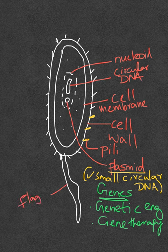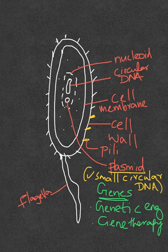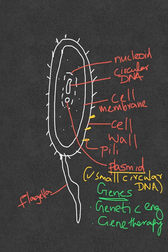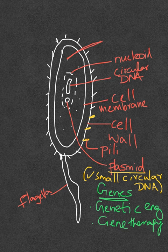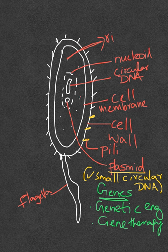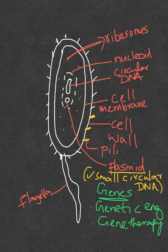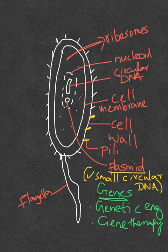The flagella helps in locomotion or the movement of the prokaryotic cell. Also, the prokaryotes contain ribosomes. These dotted structures here represent the ribosomes. The ribosomes are essential for protein synthesis within the cell. These are the basic structures of a prokaryotic cell.